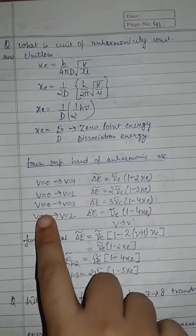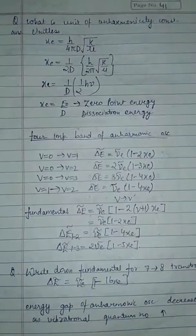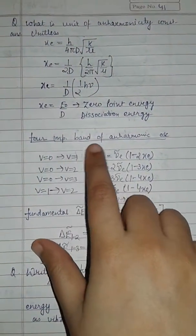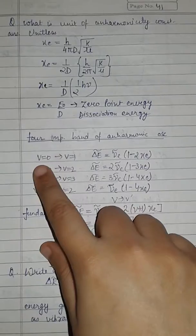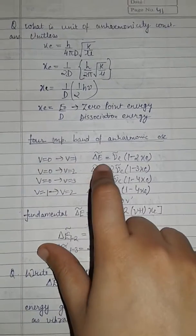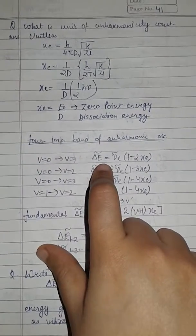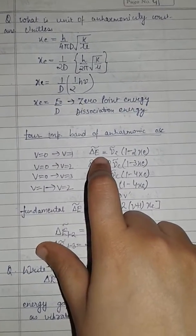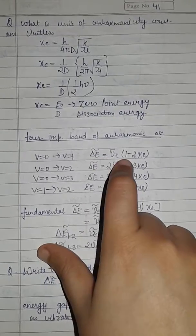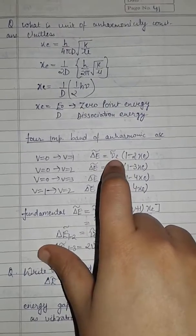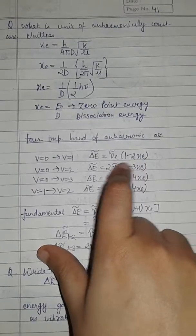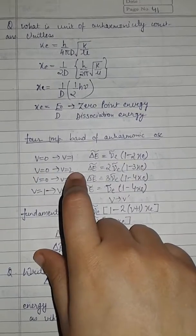There are four important bands of anharmonic oscillations. For the transition V=0 to 1, it is the fundamental transition and energy is given as ν_e(1 minus 2X_e). For the 0 to 2 transition,